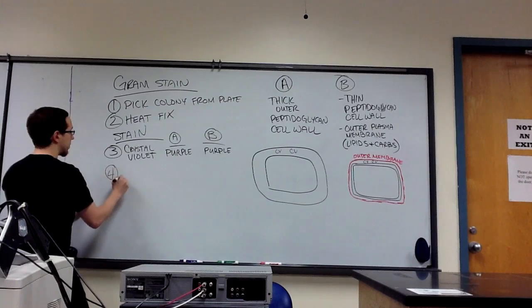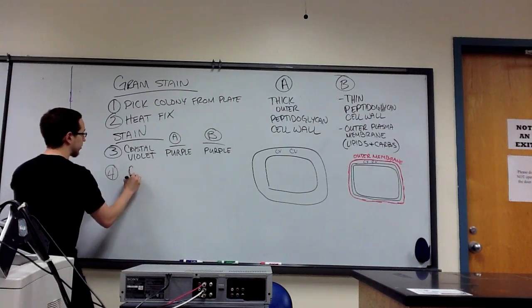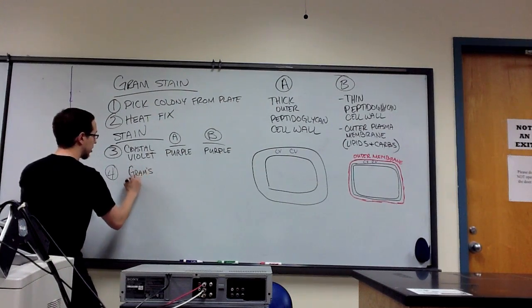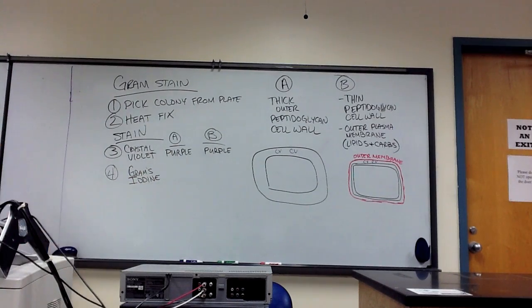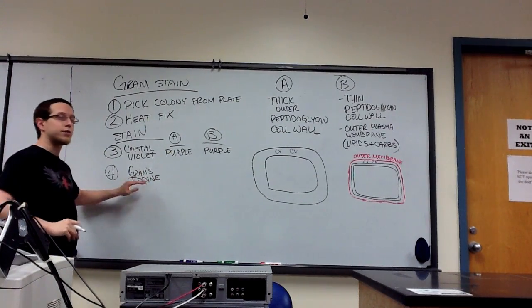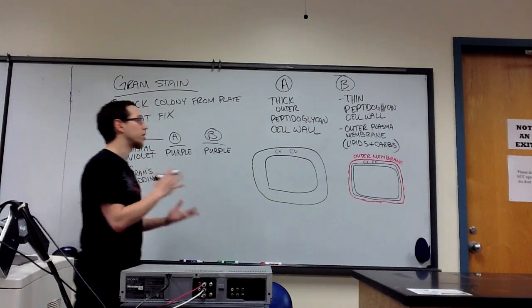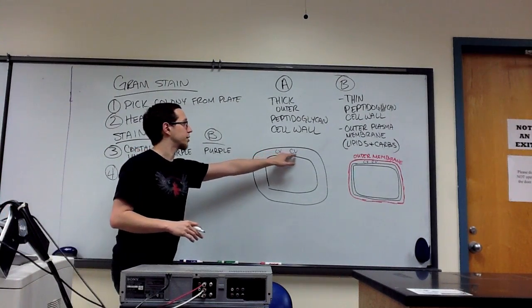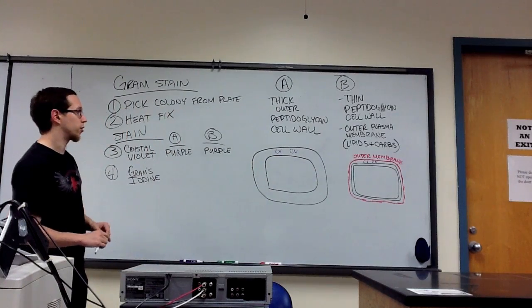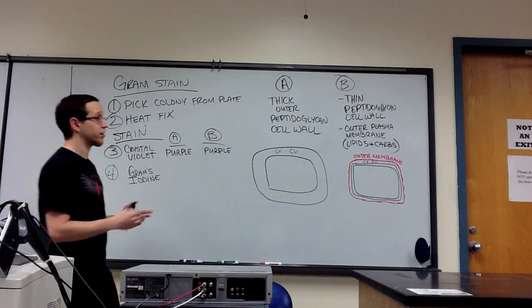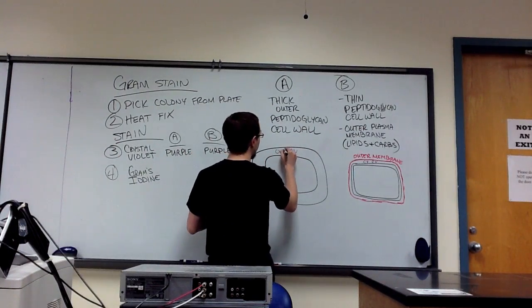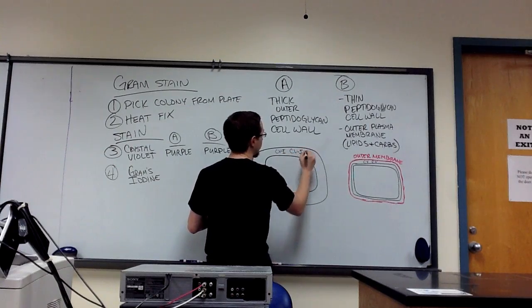Our next step is we add a particular type of iodine called Gram's iodine. This doesn't actually change the color. This is a mordant, and what it does is it alters the solubility of our crystal violet. Actually, more importantly too, it forms a complex with the crystal violet.